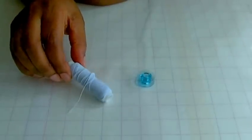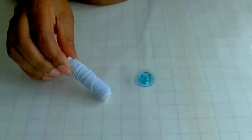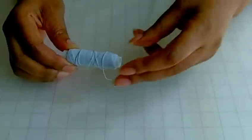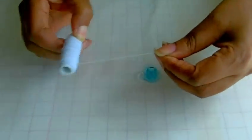Here we have the shirring elastic and as you can see it just looks like any regular thread other than the fact that it looks thicker and it's elasticated.